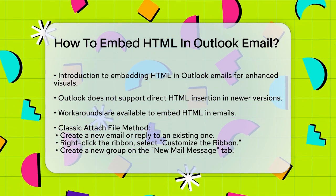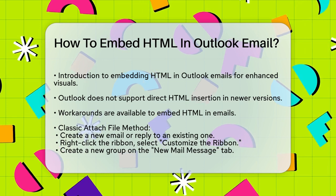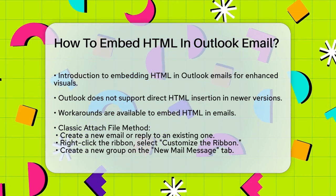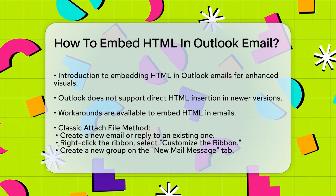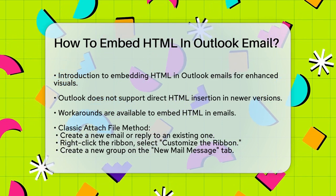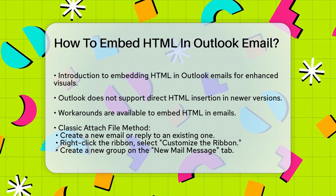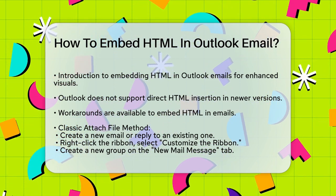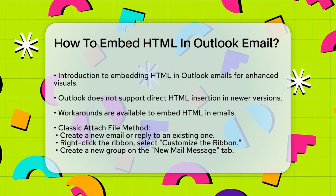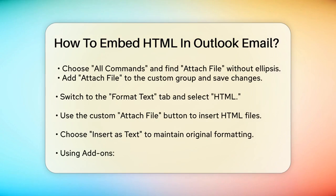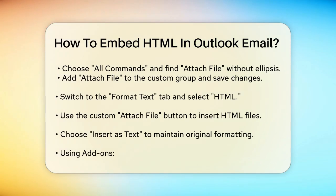One way to embed HTML is by adding the classic attach file button to your Outlook ribbon. Here's how you can do it. Start by creating a new email or replying to an existing one. Right-click on the ribbon and select customize the ribbon. Create a new group on the new mail message tab and rename it, for example, insert HTML. From the choose commands from drop-down, select all commands and find the attach file option without the ellipsis. Add this command to your custom group and save the changes.